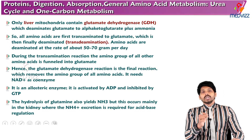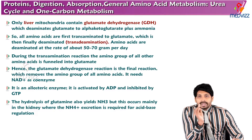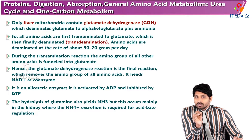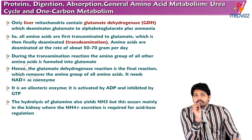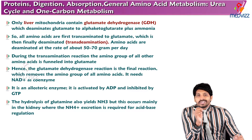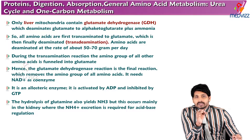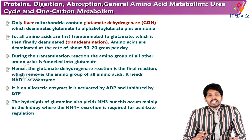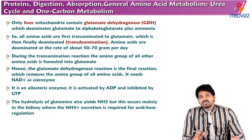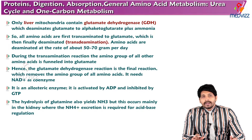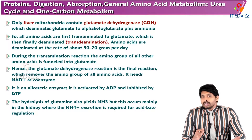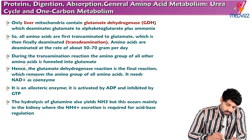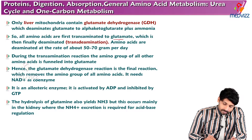Only liver mitochondria contain glutamate dehydrogenase. With the help of glutamate dehydrogenase, glutamate undergoes dehydrogenation to form alpha-ketoglutarate and ammonia. This ammonia will be involved in the urea cycle. All amino acids are first transaminated to glutamate, which is finally deaminated — this is called transdeamination.